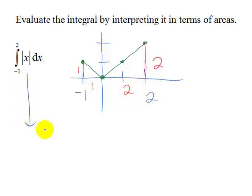is going to equal the area of this triangle, which is one half the base times the height, plus the area of this triangle,